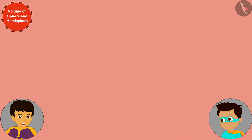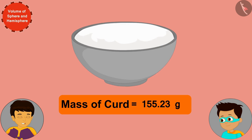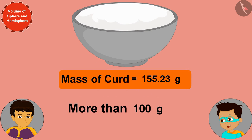Look Thomas, we got our answer. The bowl has 155.23 grams, or about 155 grams of curd. And this is more than 100 grams. This means that you can follow your mother's instructions by eating a bowl of yogurt every day.